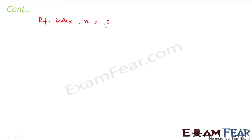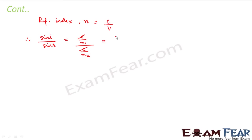We already know that refractive index is related as N equals C by V — that is, refractive index equals the ratio of the velocity of light in vacuum to the velocity of light in medium. Using this in our previous equation, sin I by sin R equals C by N1 divided by C by N2, where N1 and N2 are the refractive indices of medium 1 and medium 2. This comes out to be N2 by N1, and this is Snell's law: sin I by sin R equals N2 divided by N1.